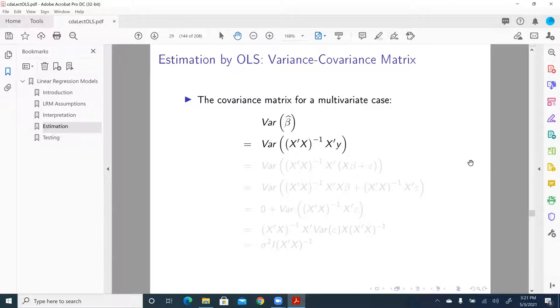Then what we're gonna do is replace Y by X beta plus epsilon, leaving everything else intact. We can do that. Y is equal to X beta plus epsilon, or the error term, from the structural model.